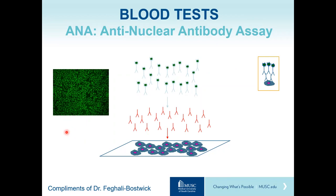These antinuclear antibodies are present in nearly all patients with scleroderma, but they are also present in many other conditions, including some normal individuals. Therefore, when present, the ANA test should be followed up with more specific autoantibody testing.